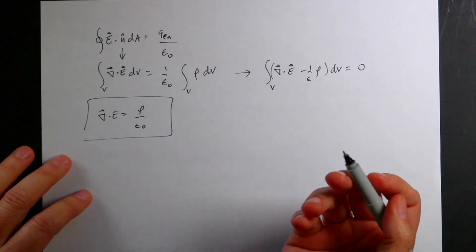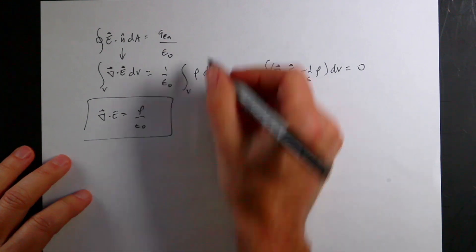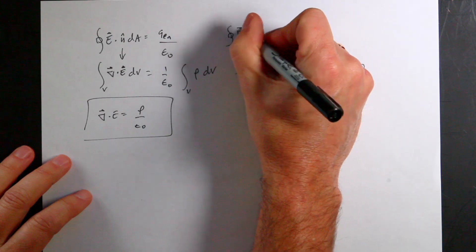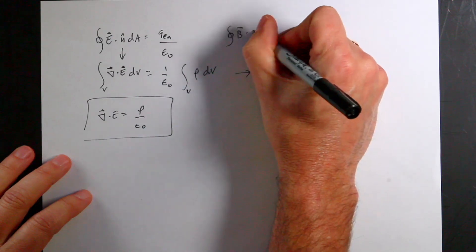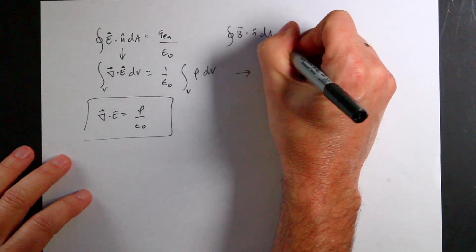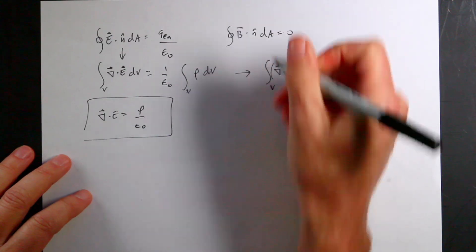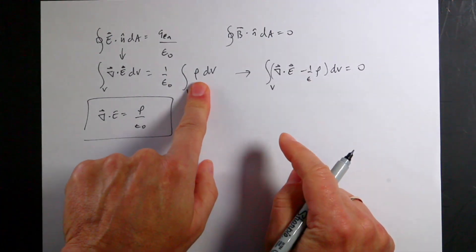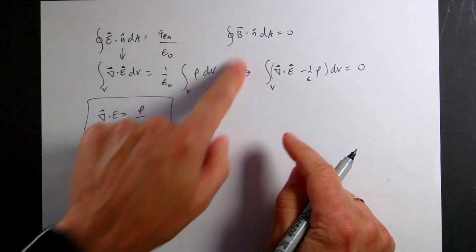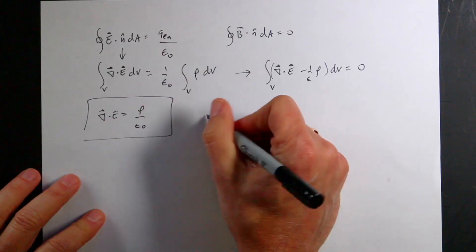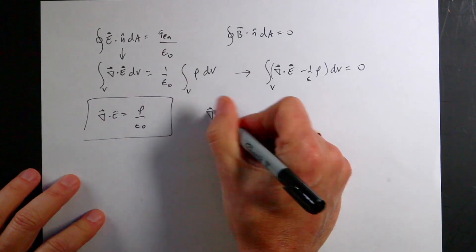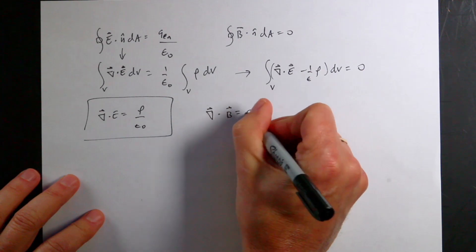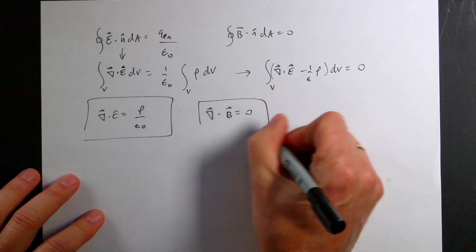We can do the exact same thing with Gauss's law for magnetism. Since B dot N-hat dA equals zero, applying the divergence theorem immediately gives del dot B equals zero. So now we have two of the differential form equations.